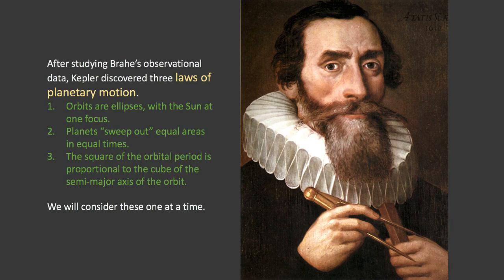So after studying that observational data, he discovered three laws of planetary motion. The first is that the orbits are ellipses with the sun at one focus. We'll talk about what both of those words mean, ellipses and focus. Number two, planets sweep out equal areas in equal times in their orbits around the sun. That the square of the orbital period is proportional to the cube of the semi-major axis of the orbit. So I don't expect you to read those and know exactly what each one of them means. So we're going to unpack them one at a time.